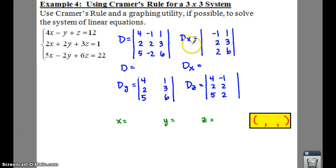Now, we need to find your D sub x, D sub y, and D sub z. When you find those, remember, if you're trying to find D sub x, you're going to take out the D sub x row, and in its place, you're going to plug in your constants.